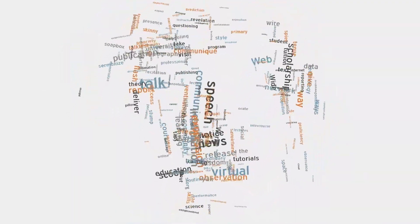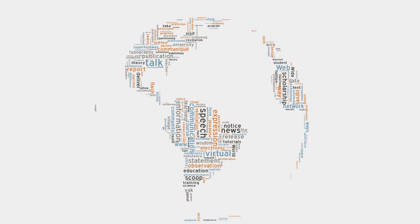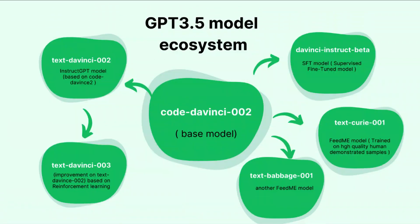The key difference between the two is that ChatGPT is optimized for conversational AI, which means it can generate text that's more coherent, contextually aware, and human-like.